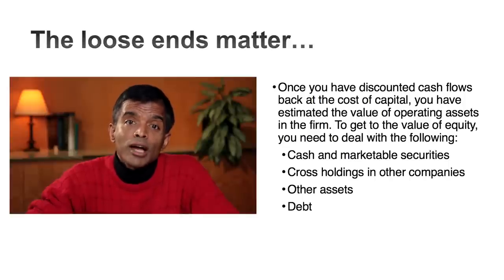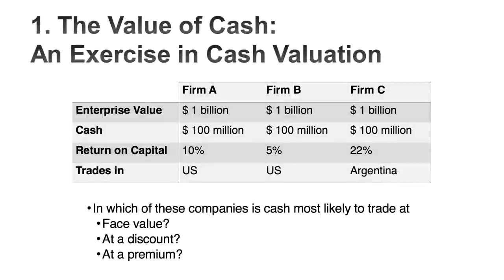To understand how cash affects valuation, consider three companies that look exactly the same in terms of business value — all have billion-dollar values from discounting cash flows at cost of capital, and all have exactly the same cash balance of a hundred million dollars. Where they differ: Company A has return on capital historically equal to its cost of capital in a developed market. Company B has a return on capital of five percent, well below its cost of capital, also in a developed market. Company C has generated well above its cost of capital and is an emerging market company.